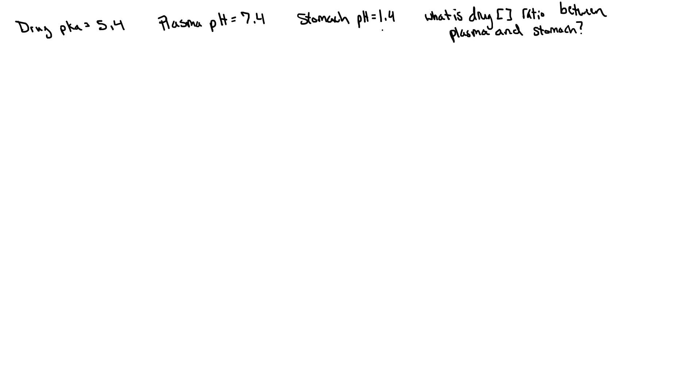Okay so what I've done here is I've written down some of the key details. I have the drug pKa of 5.4, the plasma pH of 7.4, and the stomach pH of 1.4. And the question is asking what is the concentration ratio between plasma and stomach?